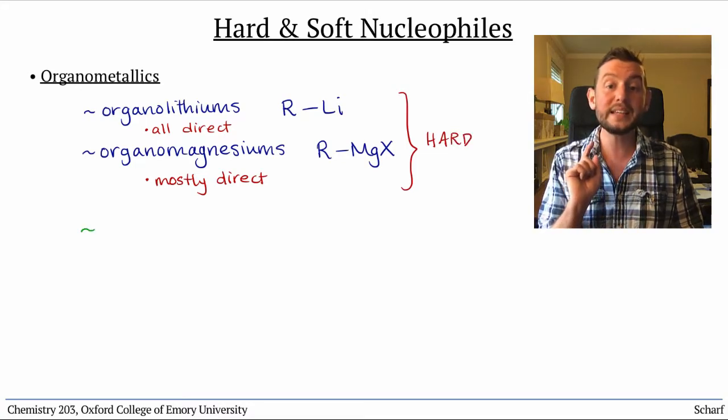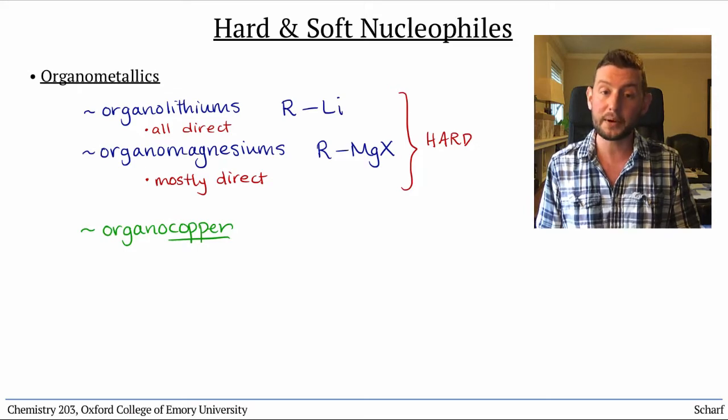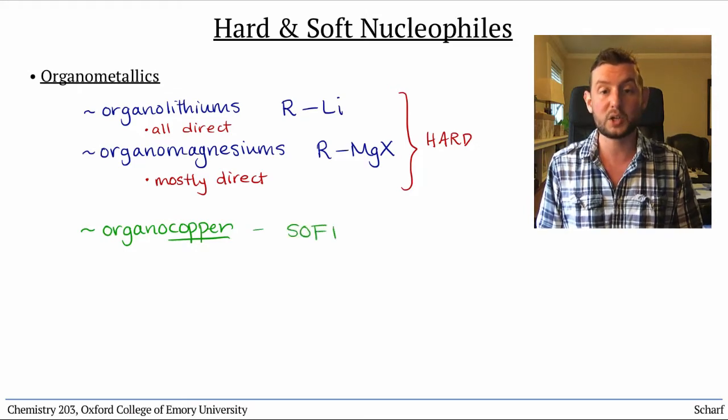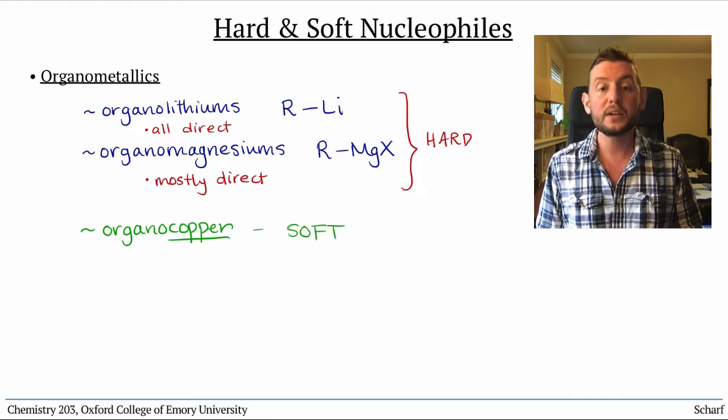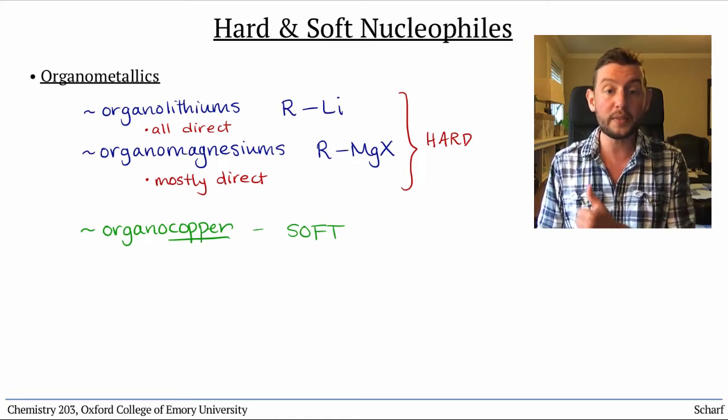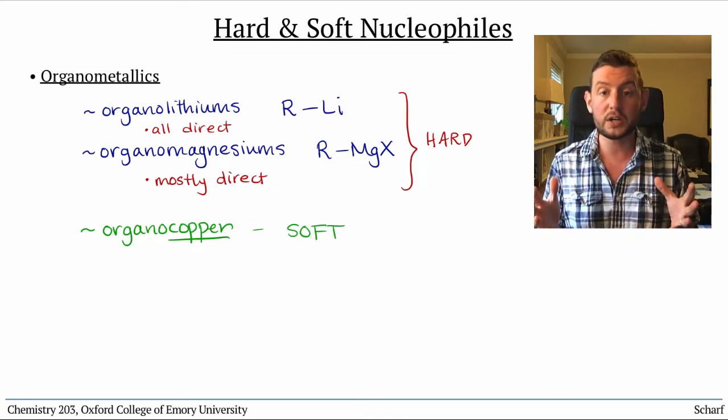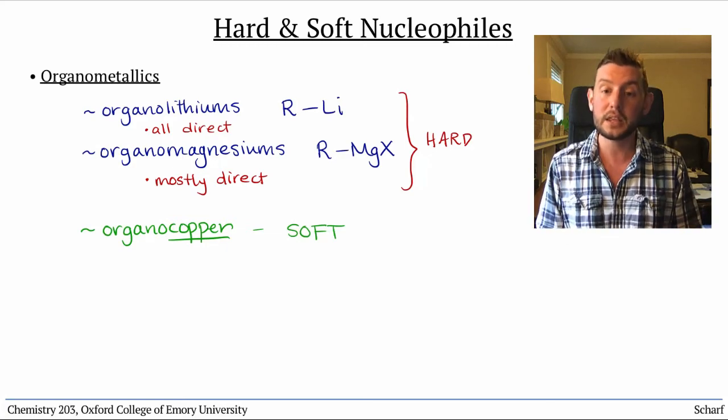There is a special sort of organometallic reagents based on copper that are quite soft. Their softness arises from the fact that copper, all the way at the right-hand side of the transition metals, is much larger and less electropositive than either lithium or magnesium.